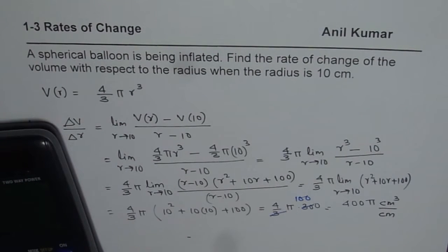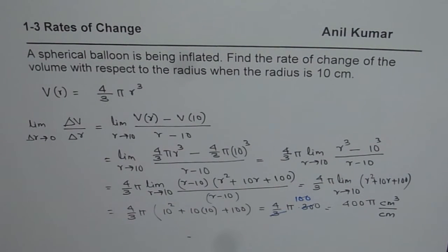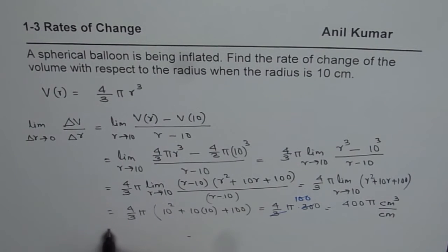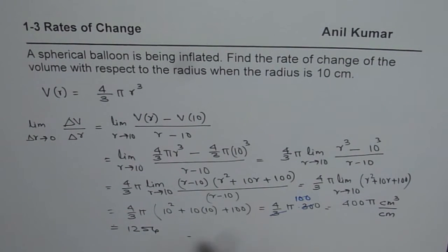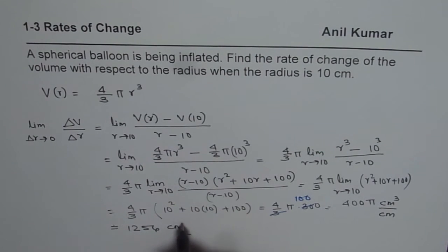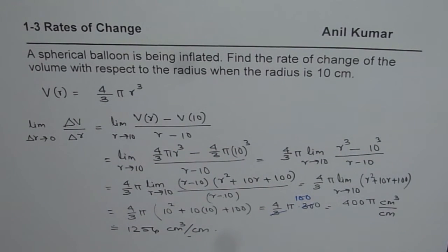So at times you can use 3.14 and write the answer to approximate place also, so we can use this value, so that is we can do pi times 400, that gives you 1256.6, so we can say approximately 1256 centimeter cube per centimeter. So that is the answer for the given question, I hope that helps, thank you and all the best.